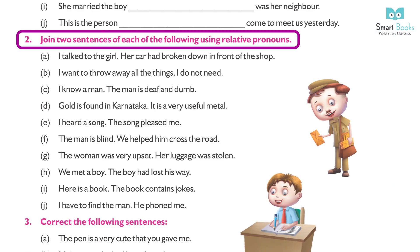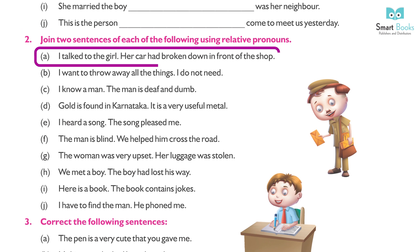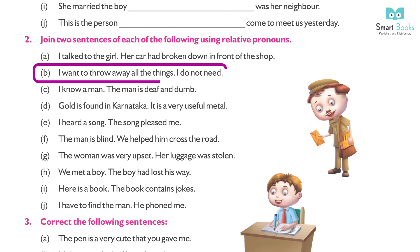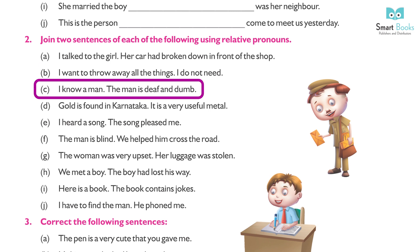(i) She married the boy who was her neighbor. (j) This is the person who came to meet us yesterday. Exercise 2 — Join two sentences using relative pronouns. (a) I talked to the girl; her car had broken down in front of the shop. Answer: I talked to the girl whose car had been broken down in front of the shop. (b) I want to throw away all the things I do not need. Answer: I want to throw away all the things which I do not need.